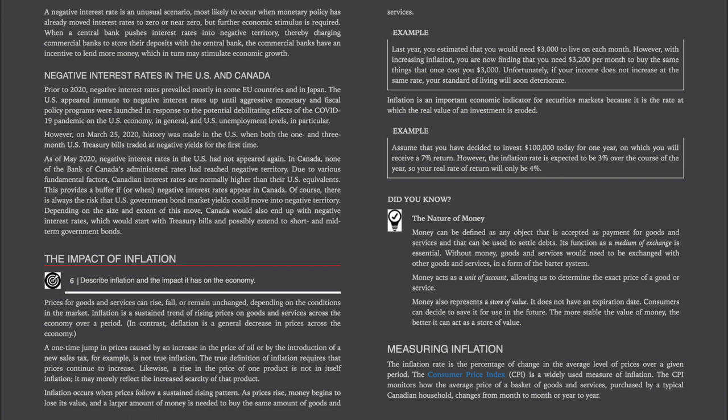The nature of money. Money can be defined as any object that is accepted as payment for goods and services and that can be used to settle debts. Its function as a medium of exchange is essential — without money, goods and services would need to be exchanged in a form of the barter system. Money acts as a unit of account, allowing us to determine the exact price of a good or service. Money also represents a store of value — it does not have an expiration date, and consumers can decide to save it for use in the future. The more stable the value of money, the better it can act as a store of value.